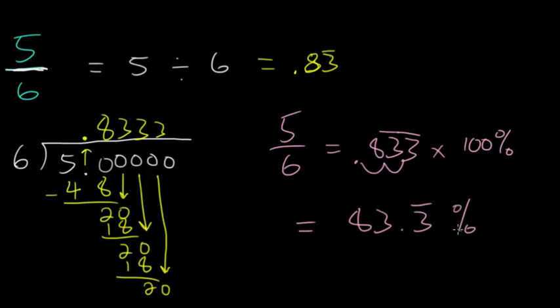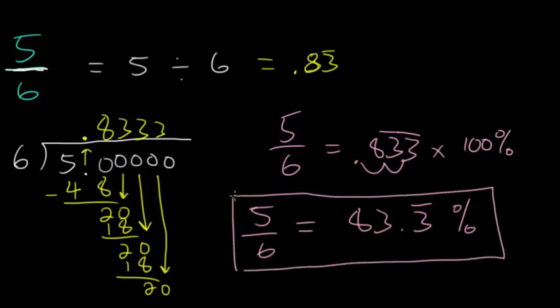And again, if you want to double check your work, just think about it in reverse. 83.3 repeating percent, we'll just divide that by 100 and get rid of the percent sign. And then you get 0.83 repeating, changing it back to a decimal. So it does make sense that this is the answer. So 5 sixths does equal 83.3 repeating percent.